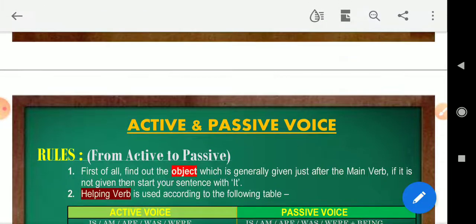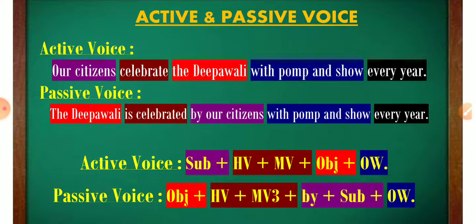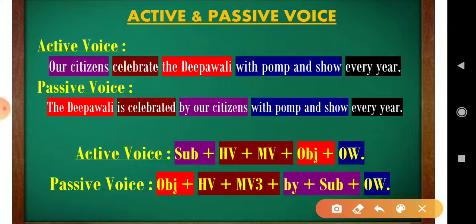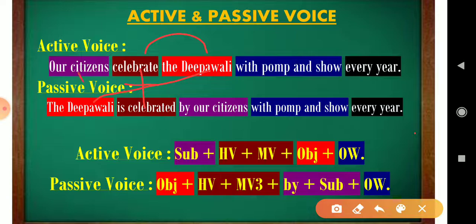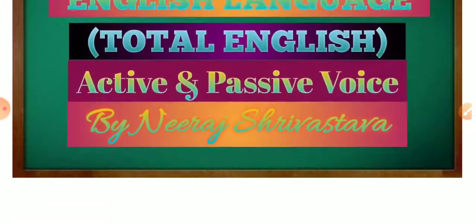These are the five basic rules — you should read them many times to understand. Now let's look at the active and passive structure together. In the structure diagram, the object comes first in passive voice, then the helping verb according to the table, then the main verb in third form, then 'by' plus the subject, and other words remain as they are without any change.